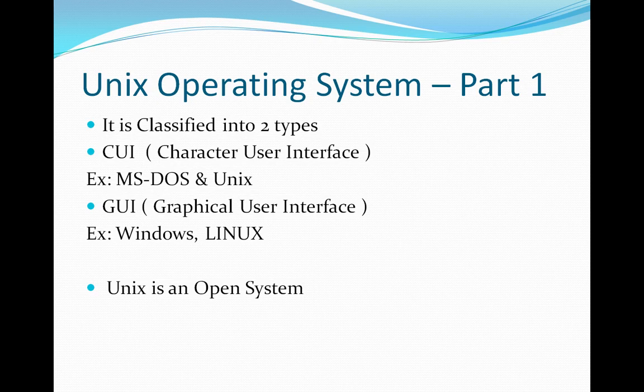What is an open system? It means the source code is open and any user can modify the UNIX source code according to their requirements or ideas. They can develop and produce their own operating system, so based on this we get many flavors of the UNIX operating system, which will be covered in the next tutorial.